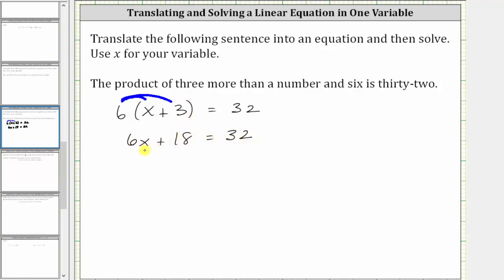The next step is to isolate the variable term by undoing the addition. The opposite operation of plus 18 is minus 18, so we subtract 18 on both sides. Simplifying, 18 minus 18 is zero, giving us six x equals 32 minus 18, which equals 14.